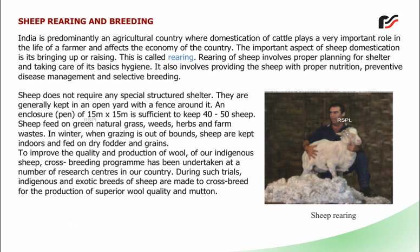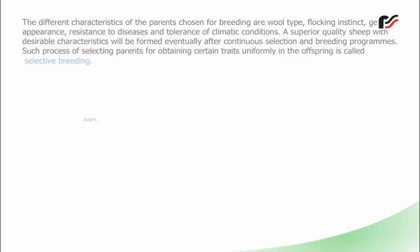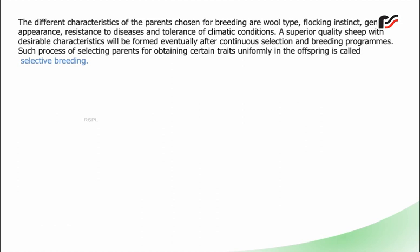To improve the quality and production of wool of our indigenous sheep, a cross-breeding program has been undertaken at a number of research centres. During such trials, indigenous and exotic breeds of sheep are made to cross-breed for the production of superior wool quality and mutton. The different characteristics of the parents chosen for breeding are wool type, flocking instinct, general appearance, resistance to diseases and tolerance of climatic conditions. A superior quality sheep with desirable characteristics will be formed after continuous selection and breeding programs. Such a process of selecting parents for obtaining certain traits uniformly in the offspring is called selective breeding.